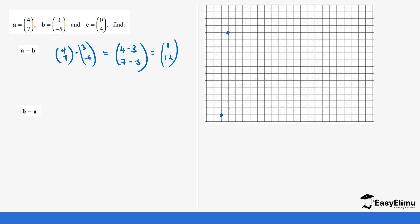Let's look at another example: b minus a. So this is the same as (3, -5) minus a, which is (4, 7). This becomes three minus four, and minus five minus seven. Three minus four is minus one, and minus five minus seven is minus twelve.